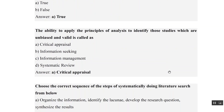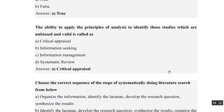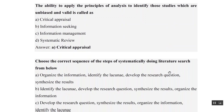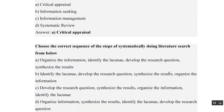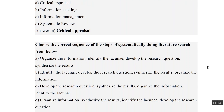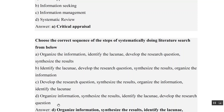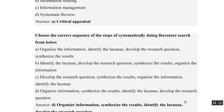Choose the correct sequence of steps of systematically doing a literature search. This will test our knowledge. The options include: organize information, identify lacunae, develop research questions, synthesize. Let us recall the steps: organize, synthesize, lacunae, research question. Looking at the options, Option D satisfies this order: organize, synthesize, lacunae, and research question.